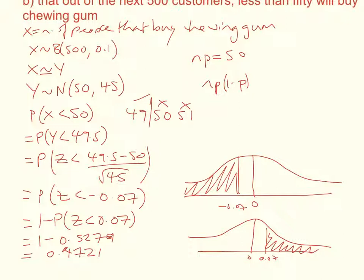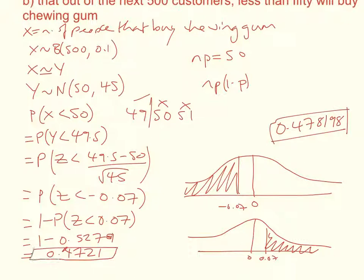Calculating the real probability using the binomial distribution directly, we would have got 0.478198, which is again very close to our approximated answer.